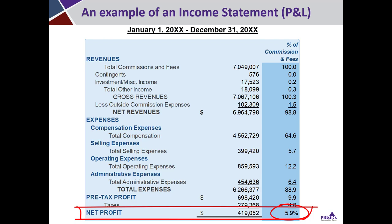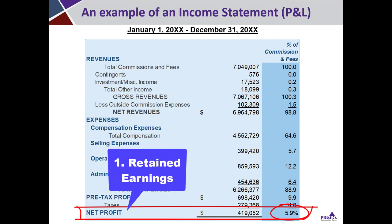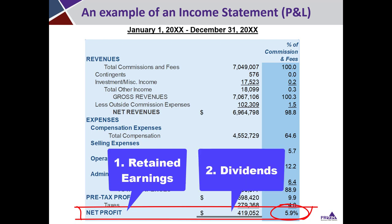After it's all said and done on the income statement, net income can go to one of two places broadly speaking: it can either stay within the company as retained earnings on the balance sheet — money we're keeping in the company — or it can be paid out as dividends, which are distributions to shareholders who are the owners of the company.